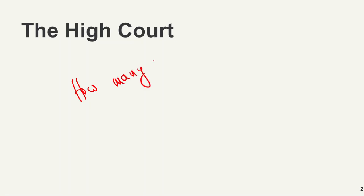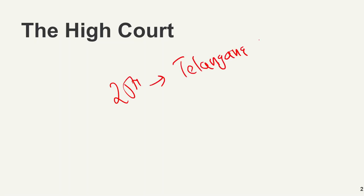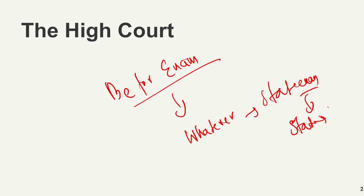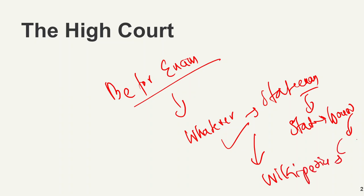The Chief Justice plus other judges of the High Court are appointed by the President. How many High Courts are there in India? The number is 25. This question comes directly in exams. The 25th and last High Court is the Telangana High Court.